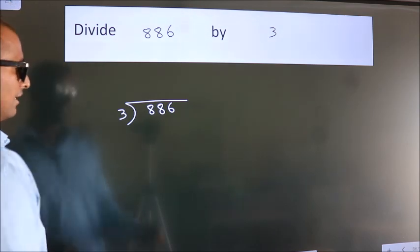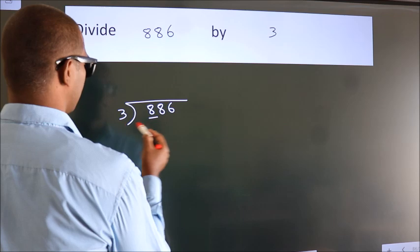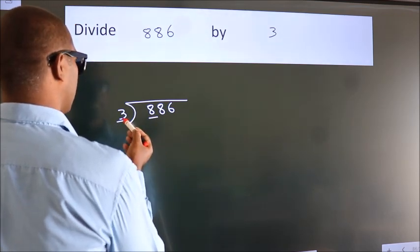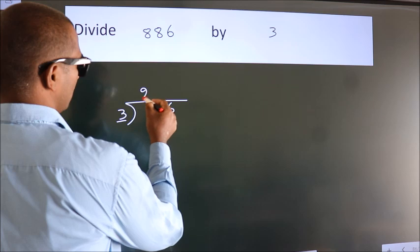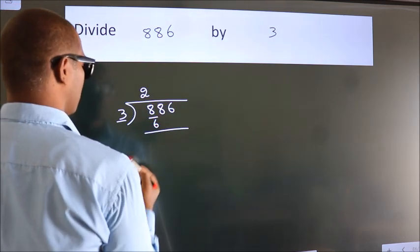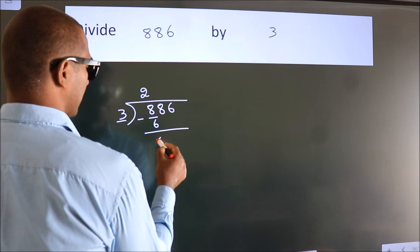Next. Here we have 8, here 3. A number close to 8 in 3 table is 3 2s, 6. Now we should subtract. We get 2.